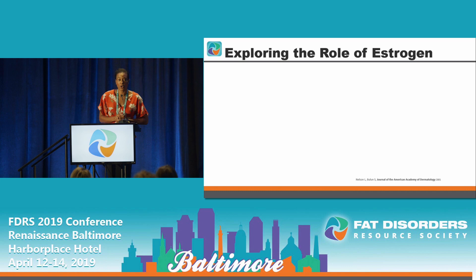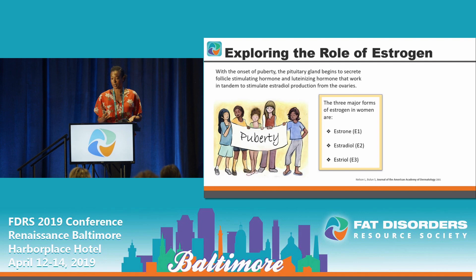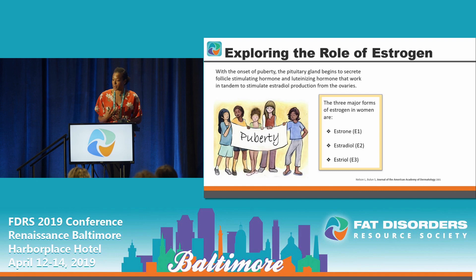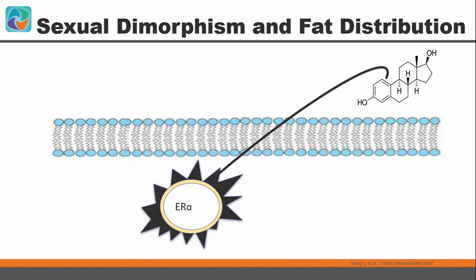In exploring the role of estrogen, it's important to know that we have three forms: estrone, estradiol, and estriol. We take this from more of the estradiol perspective because our studies in the laboratory started with looking at puberty and onset of puberty. The pituitary releases follicle-stimulating hormone and luteinizing hormone together to produce estradiol from the ovaries. This estradiol, or E2, is the active form during our reproductive years.